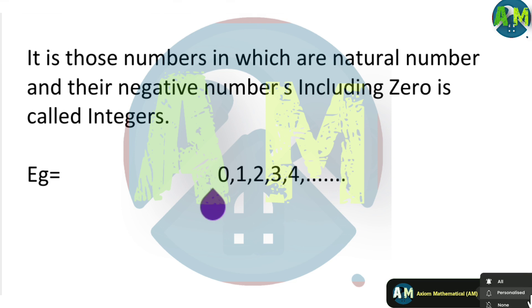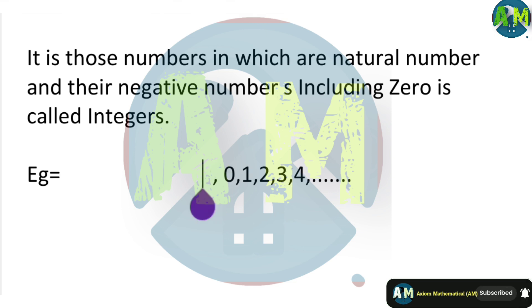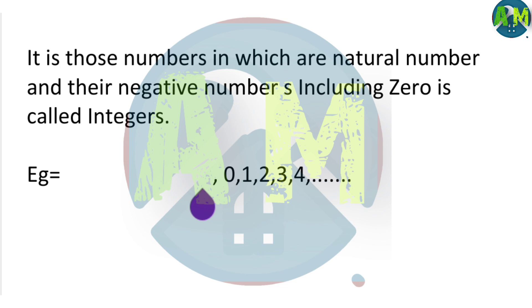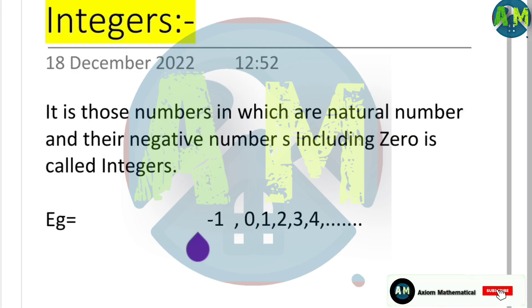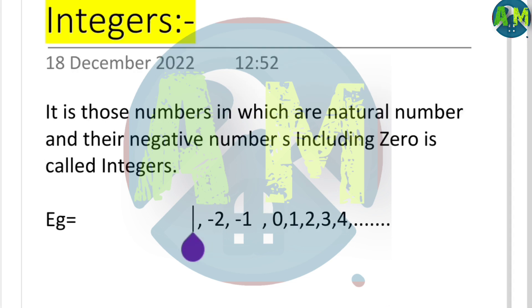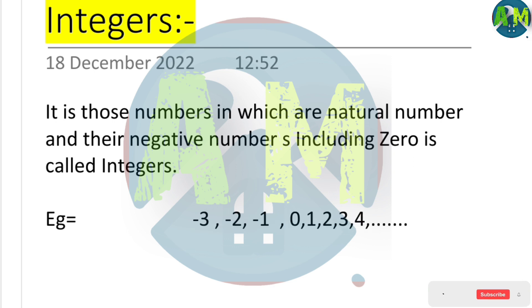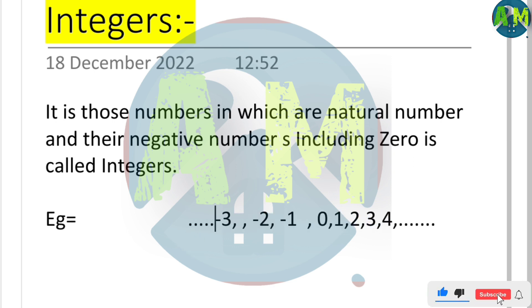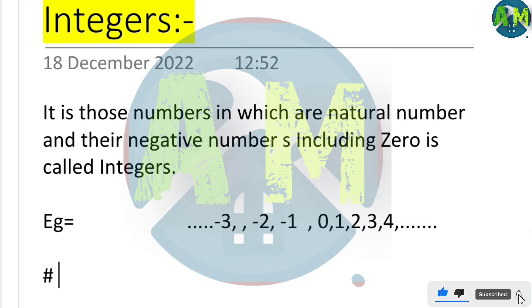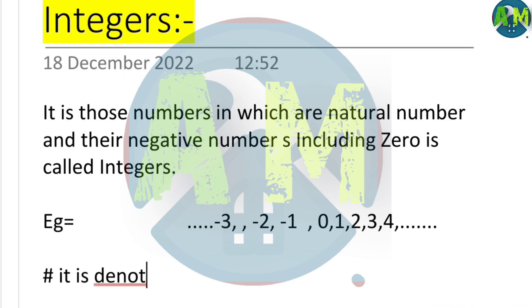Integers also include negative numbers such as: minus 1, minus 2, minus 3, and so on in the negative direction.